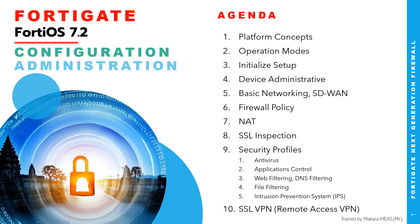Agenda two is for the operation mode of the firewall, and agenda three is regarding the initialize setup about the firewall — what is the default setting and how we can set up for the lab when you get a new device. Number four is device administration for access to the firewall, where we need to create the admin profile or administrator user. Number five is basic networking such as interface configuration, routing, and basic SD-WAN.